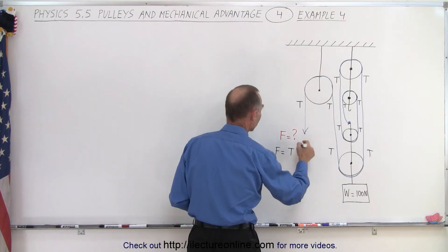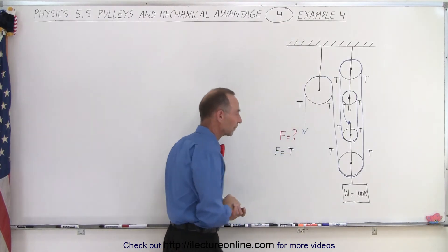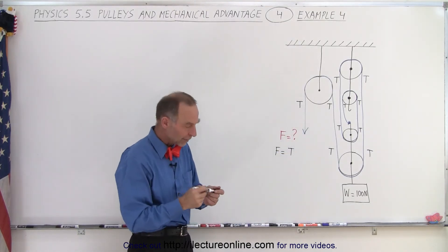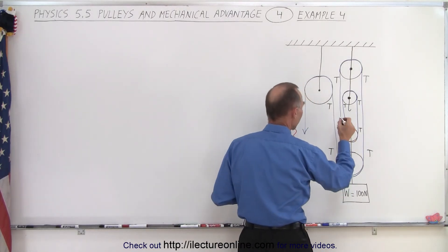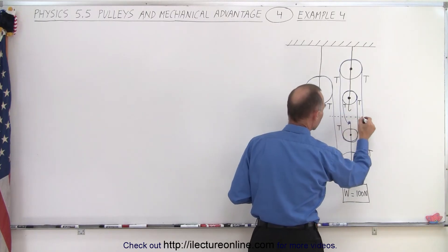It is T whatever T is. And of course we know that in this case the force must equal the tension on the string right here. All right so how do we now determine what the tension is? Well we draw a free body diagram.